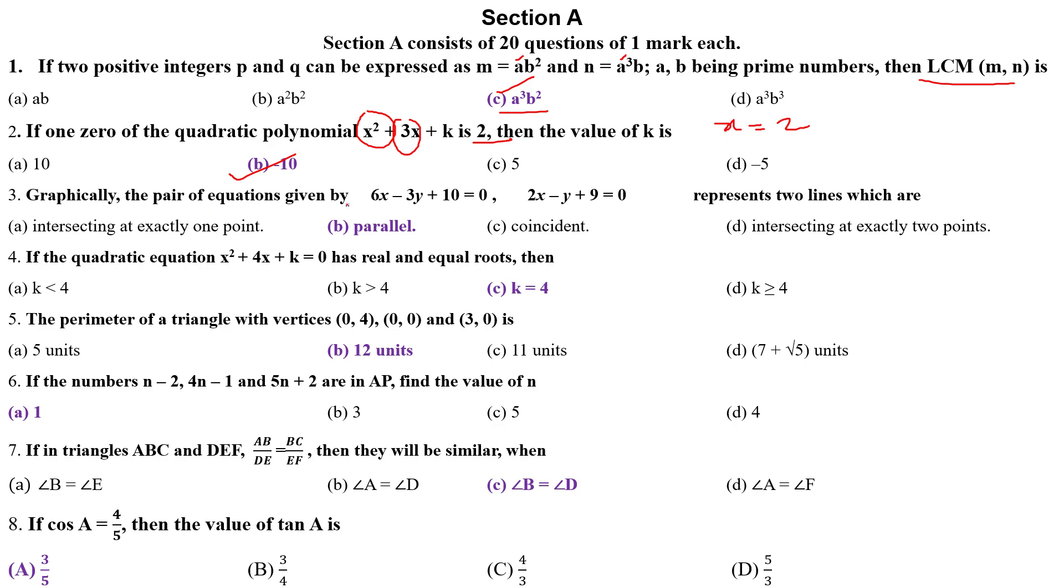Graphically, the pair of equations given by 6x minus 3y plus 10 equals 0 and 2x minus y plus 9 equals 0 represent two lines which are? How to find out? Let's see. a1 upon a2 is 6 upon 2, it is 3. Minus 3 upon minus 1 also equals 3, but 10 upon 9 is not equal to. a1 upon a2 equals b1 upon b2 but not equal to c1 upon c2. Line must be parallel because there is no solution.